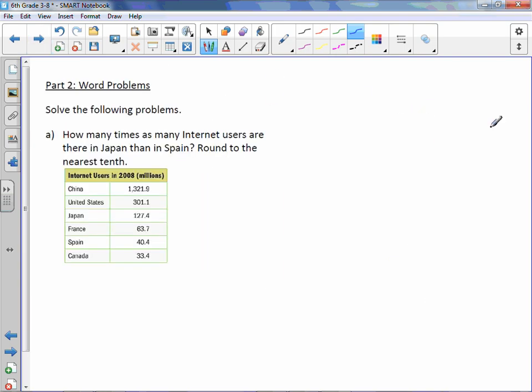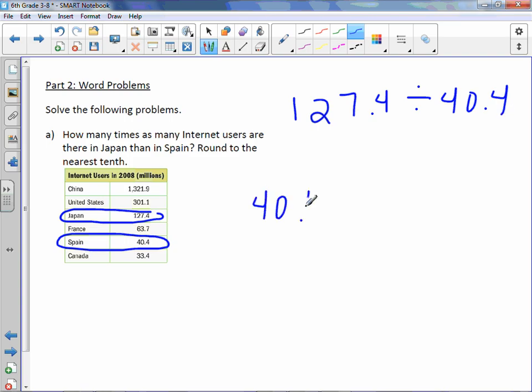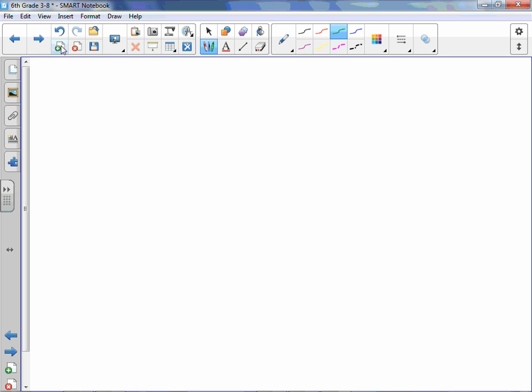How many times as many internet users are there in Japan than in Spain? Round to the nearest tenth. So we are focused on Japan and Spain, and this is in millions. So our division problem is 127.4 divided by 40.4. It does say to round to the nearest tenth, so we'll keep that in mind. I need to move my decimal point over once. We are doing 404. Well, I don't know my multiples of 404, so let's start with a plain 2. 8, 0, 8.